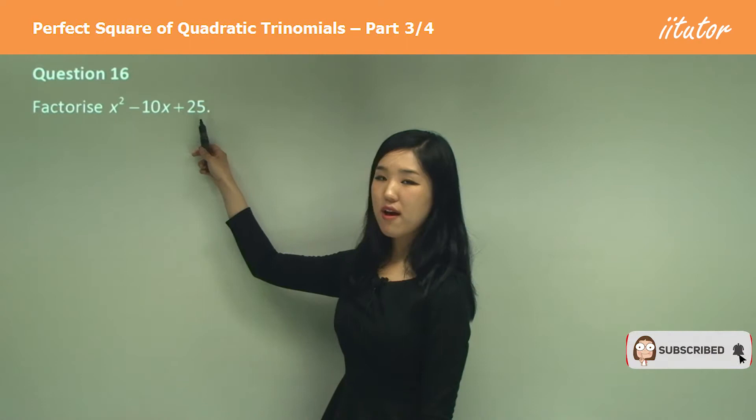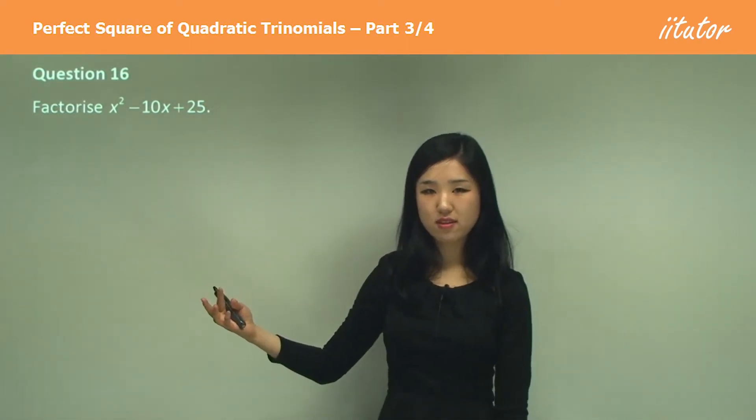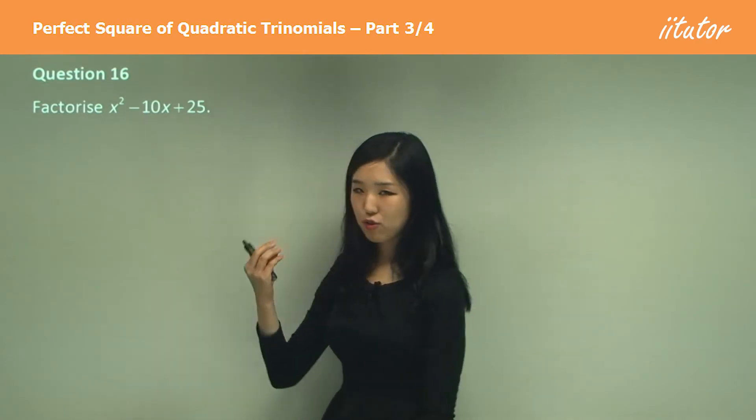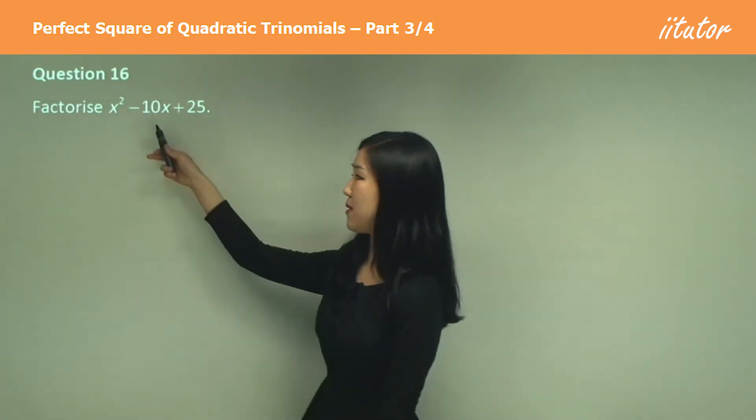Question 16. First of all, 25 is 5 times 5, isn't it? And I know that 5 plus 5 is 10. But I make sure they're both negative though, because it must be negative 10.